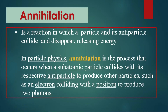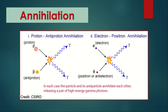Next is annihilation. Annihilation is a reaction in which a particle and its antiparticle collide and disappear, releasing energy. In particle physics, annihilation is the process that occurs when a subatomic particle collides with its respective antiparticle to produce other particles — such as an electron colliding with a positron to produce two photons. So in our universe during that time, we had subatomic particles and antiparticles.